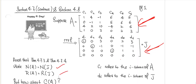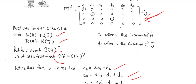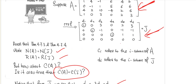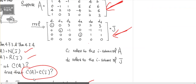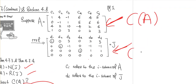Now, we know from the previous theorems that the null space of A and the null space of J are the same, and the row space of A and the row space of J are the same. But the question is: can you say that the column space of A and the column space of J are also the same? Are the linear combinations of all column vectors in A the same as those in J?